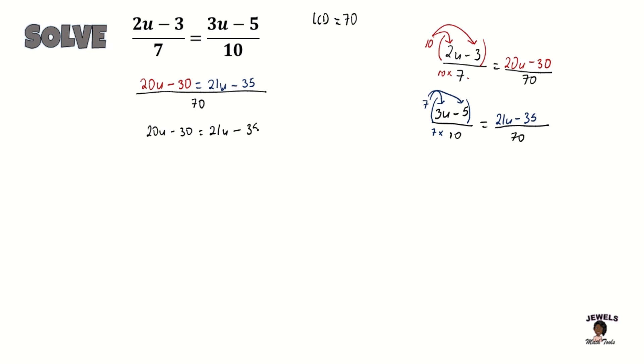We're going to begin by collecting our like terms. I'm going to start by moving my larger terms to their smaller terms so I won't have to worry about working with any negatives. Since 20u is smaller than 21u, I'm going to move my 20u to the other side of the equation.